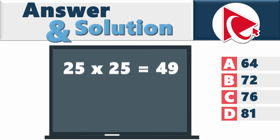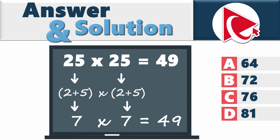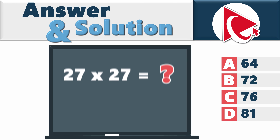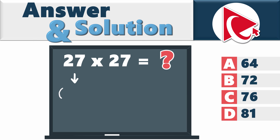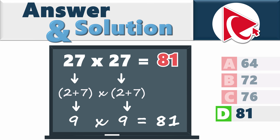The second expression would be (2+5) multiplied by (2+5), equal to 7 by 7, equal to 49. So the missing number can be calculated as (2+7) multiplied by (2+7), which equals 9 multiplied by 9, or 9 squared, which equals 81. So the correct answer here is Choice D: 81.